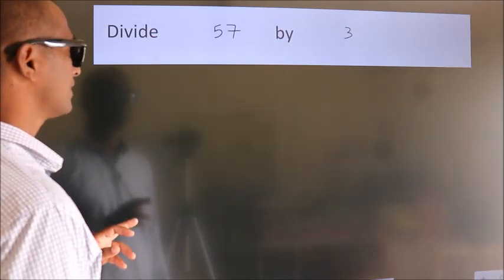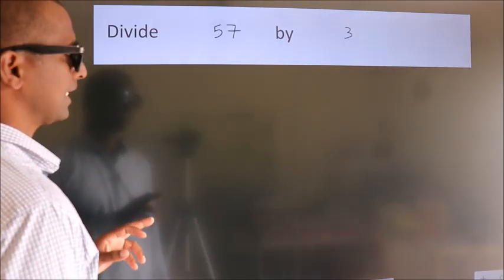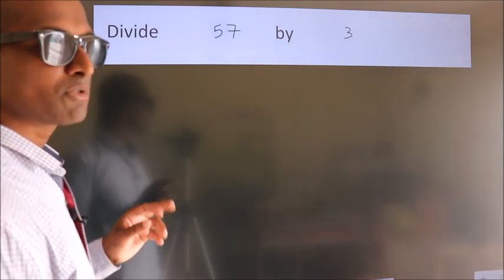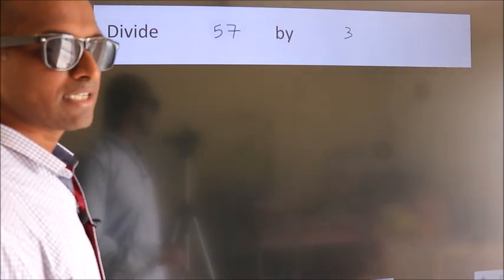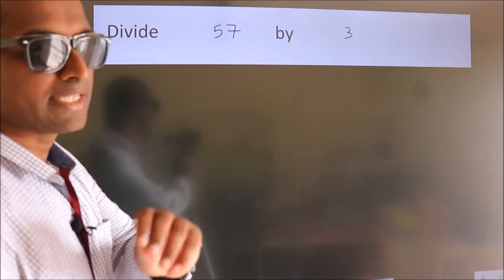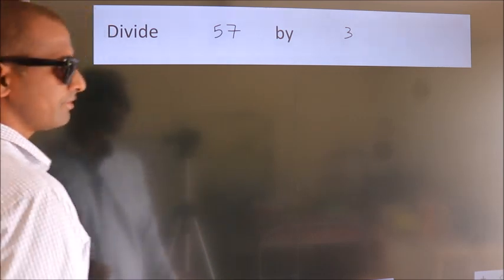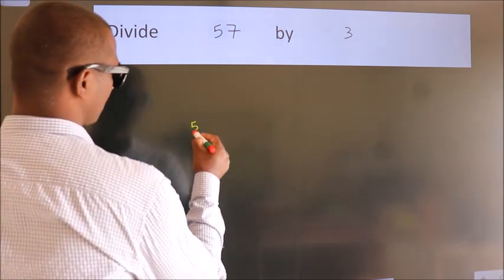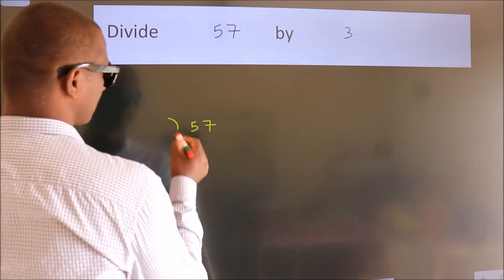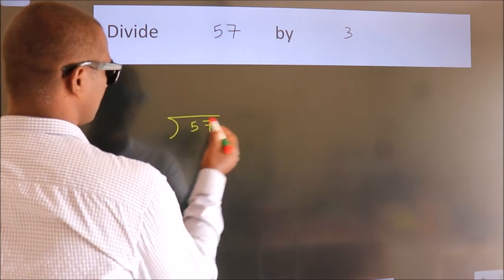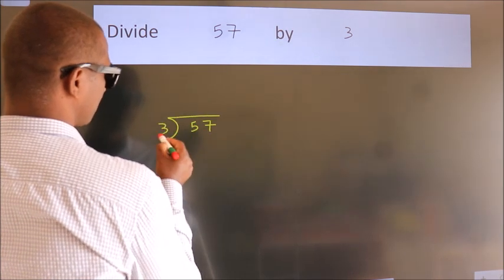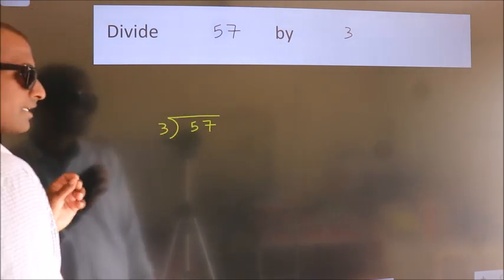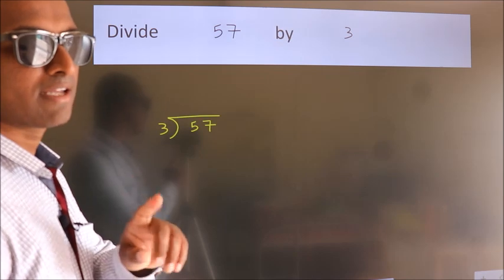Divide 57 by 3. To do this division, we should frame it in this way: 57 here, 3 here. This is your step 1.